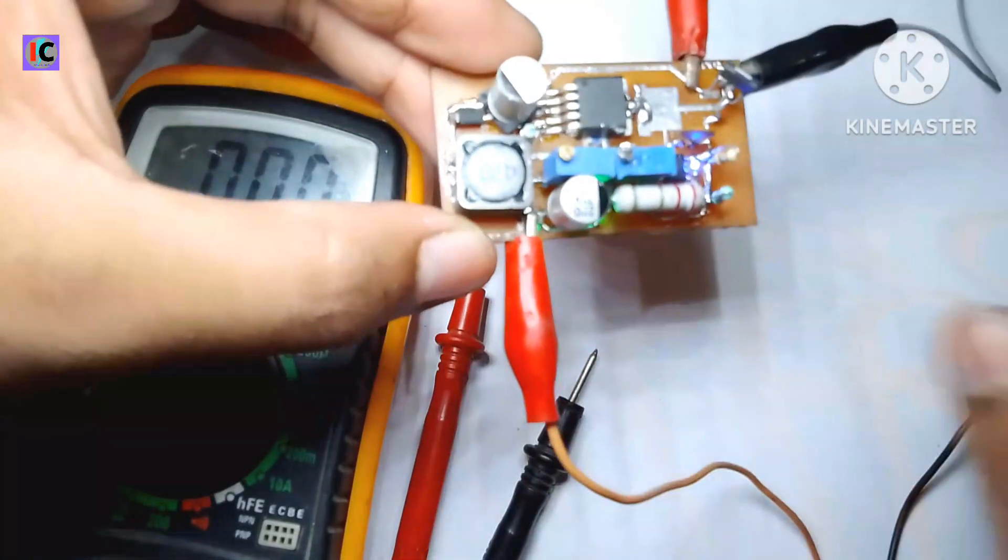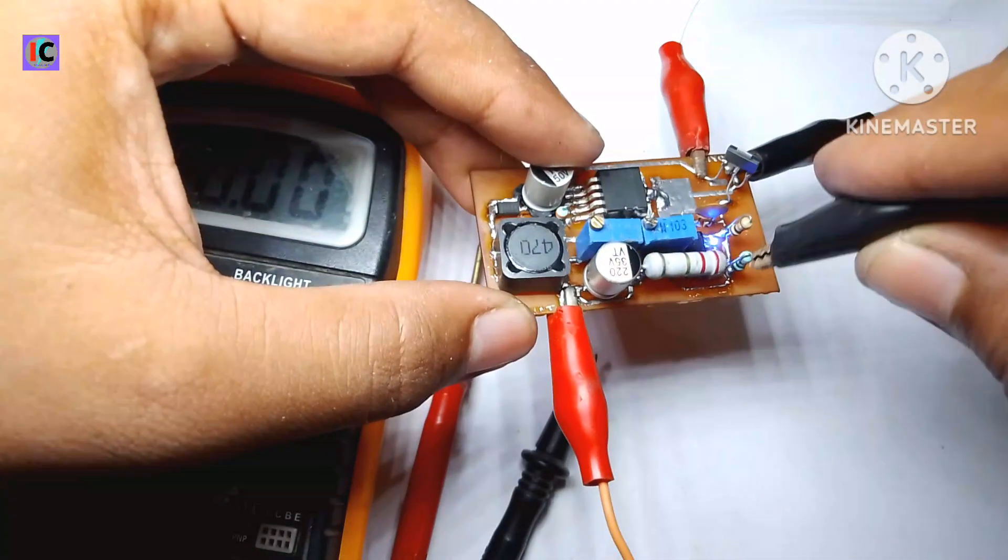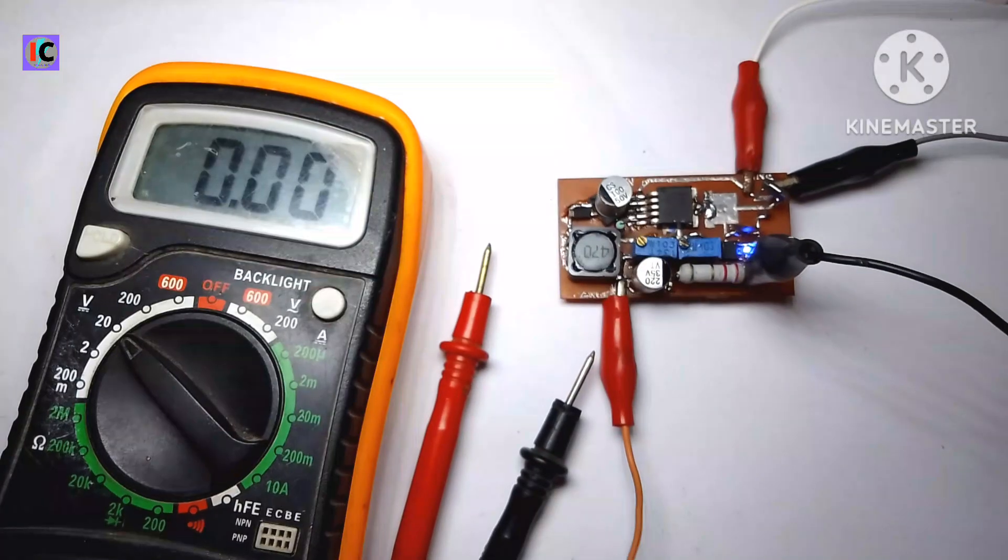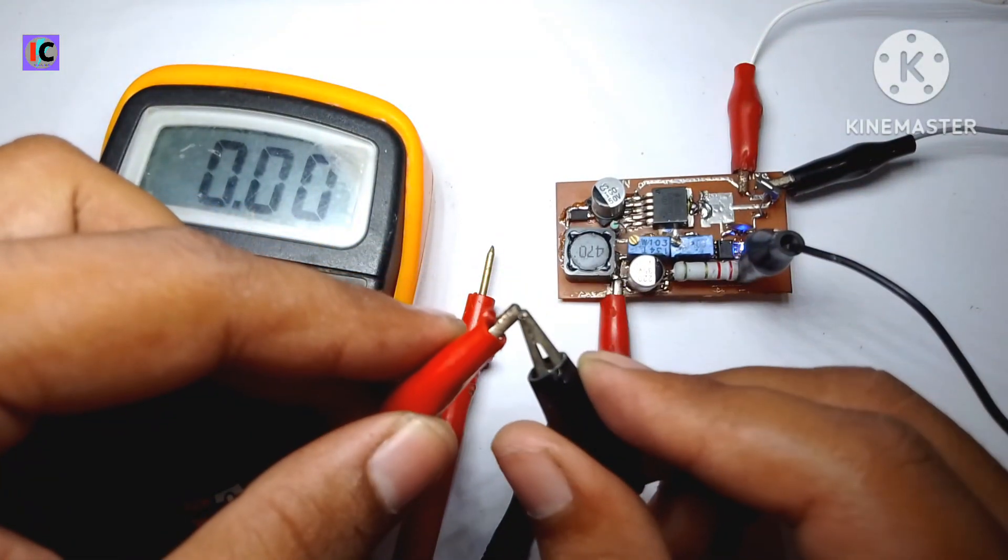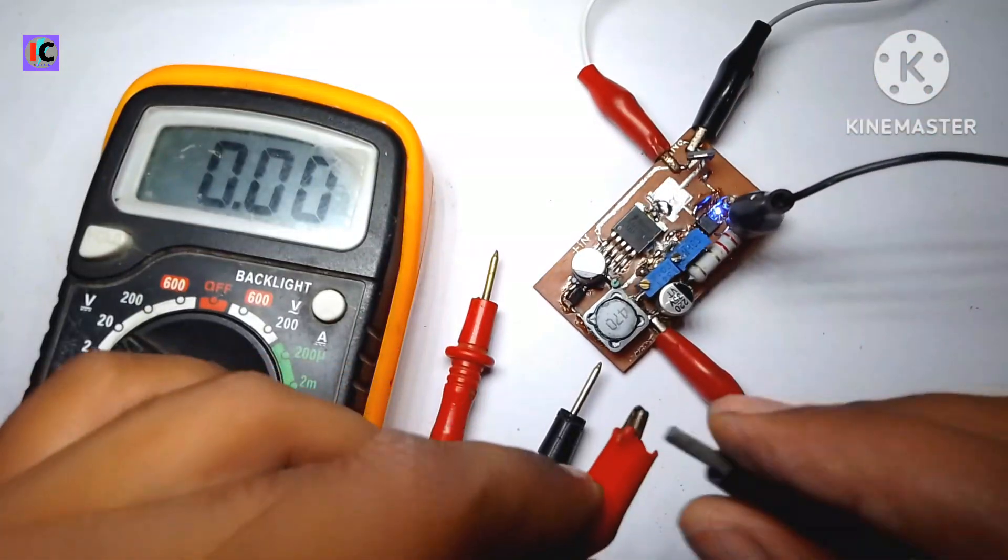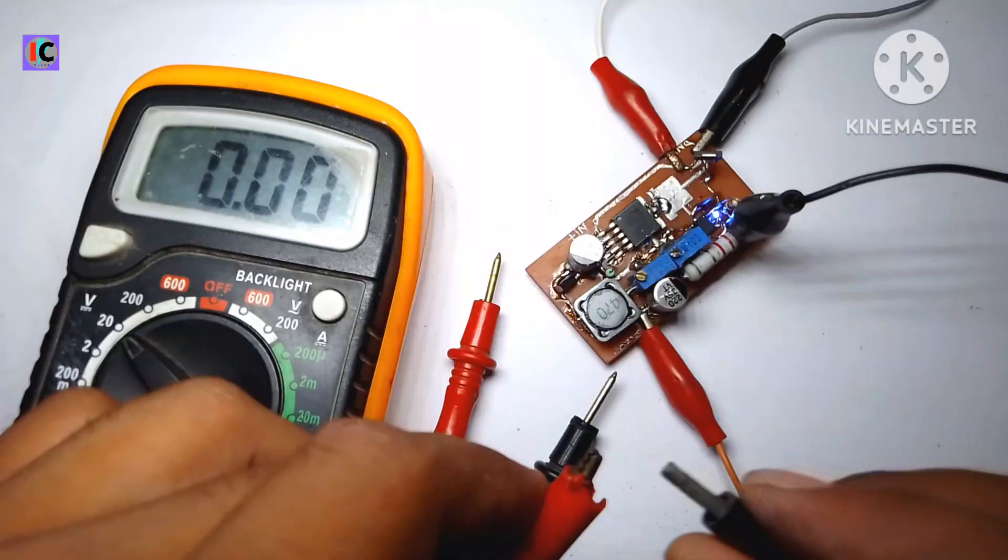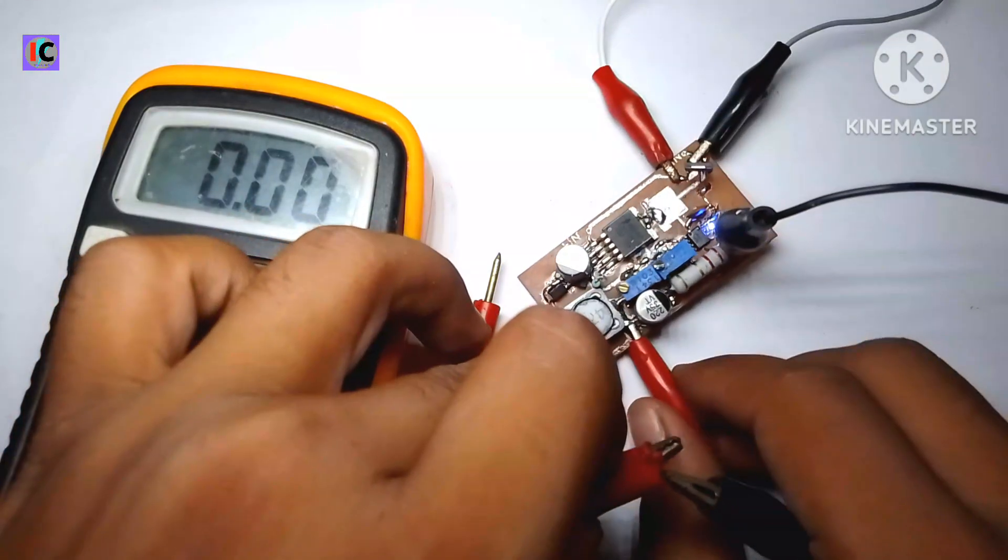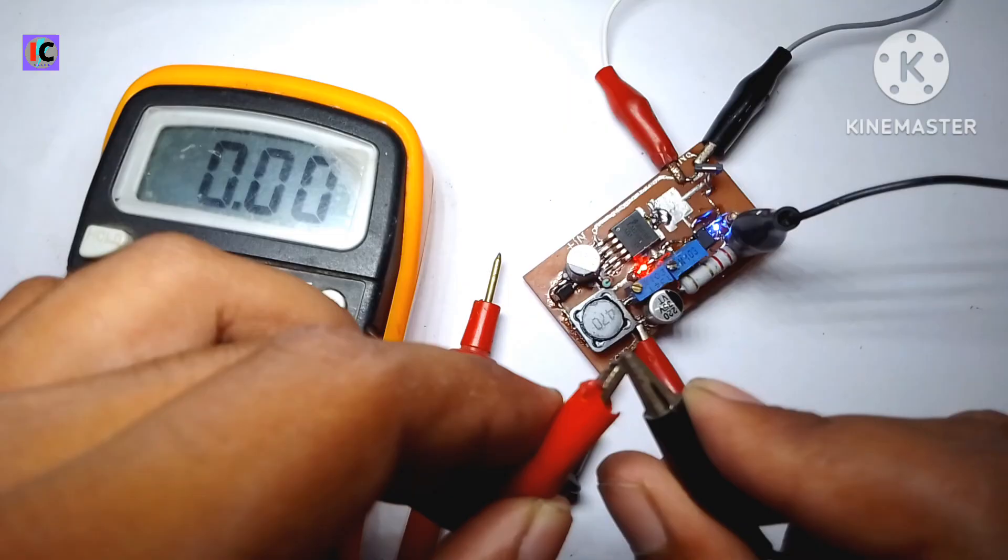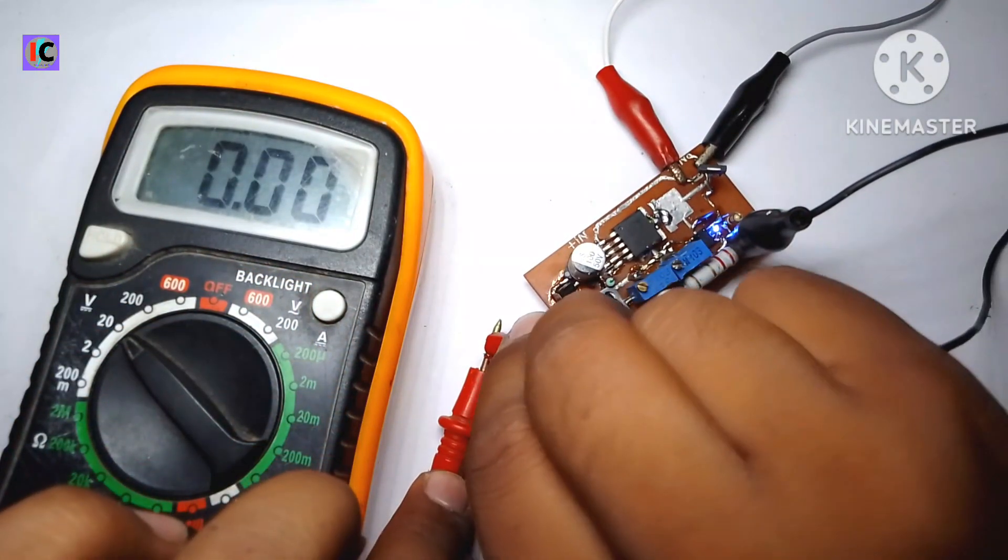I accidentally shorted the current limiting resistor, which is a very tiny SMD resistor, so the LED will be damaged - no problem with this. You can see the short circuit protection of this circuit is working very perfectly. The red LED on the circuit is showing the short circuit protection is actively working and the circuit is not blowing, which is very perfect for this project.